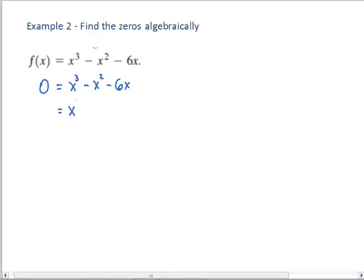Here I'll take out my greatest common factor, so I take x out and I have x squared minus x minus 6, and I'm going to now factor the trinomial and that's going to be x minus 3 times x plus 2.